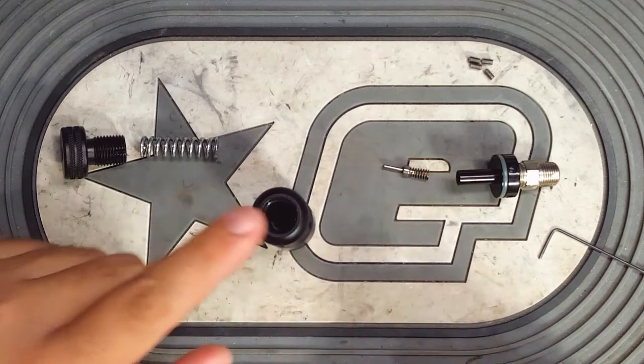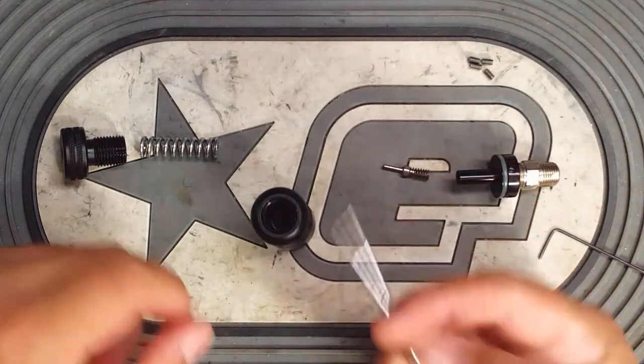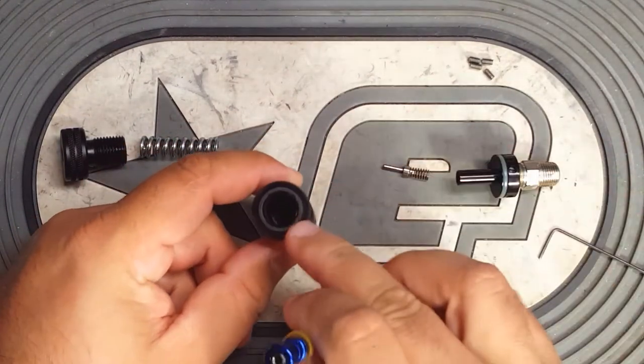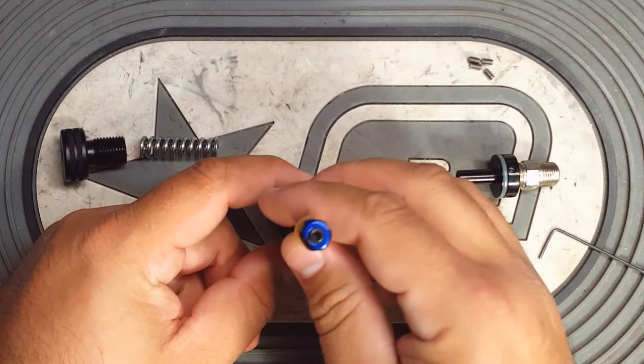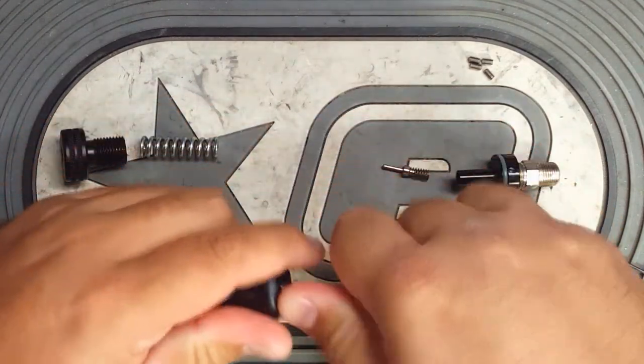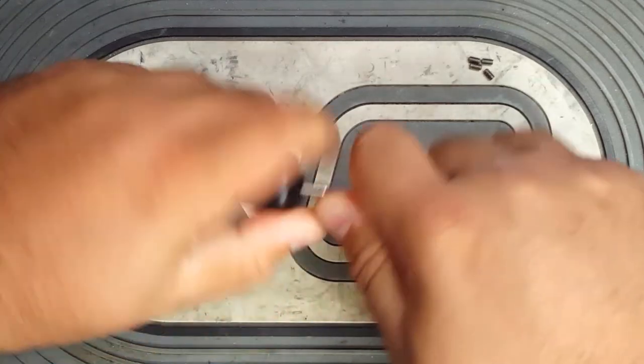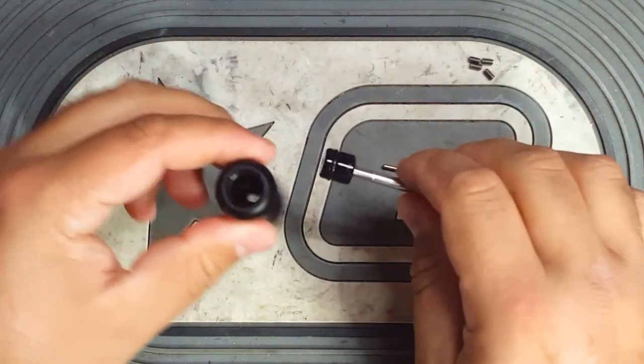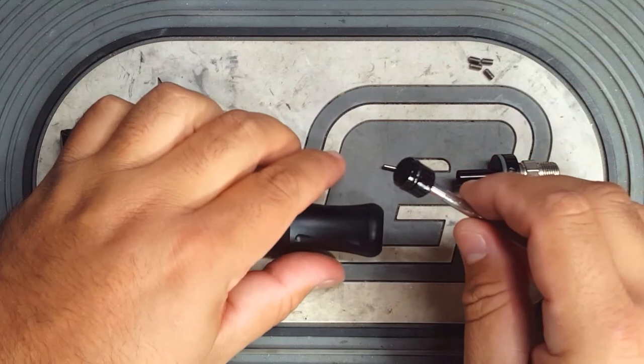And then the piston inside, that's what you need your 1032 threaded rod for. It's actually threaded on the front. So you screw the rod into the piston and use that to pull it out like so.